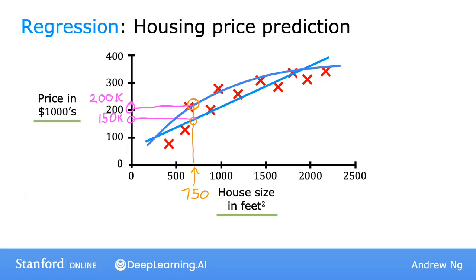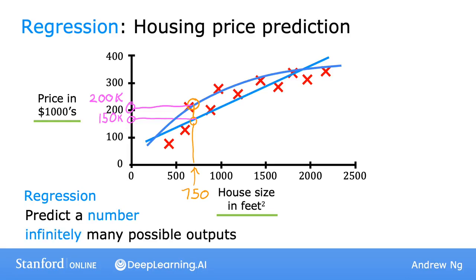To define a bit more terminology, this housing price prediction is a particular type of supervised learning called regression. By regression, I mean we're trying to predict a number from infinitely many possible numbers, such as the house prices in our example, which could be 150,000, or 70,000, or 183,000, or any other number in between. So that's supervised learning — learning input to output, or x to y mappings — and you saw an example of regression where the task is to predict a number. But there's also a second major type of supervised learning problem called classification. Let's take a look at what that means in the next video.